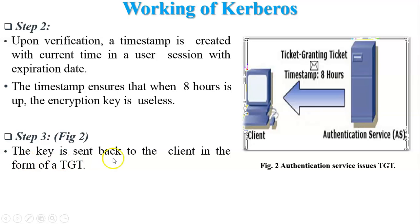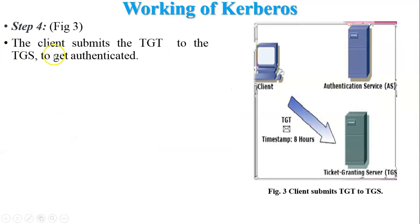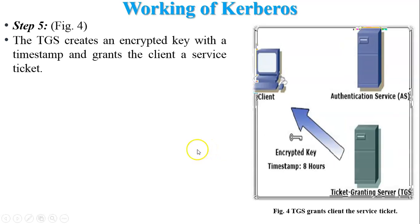Step 3: The key is sent back to the client in the form of a TGT (Ticket Granting Ticket). This TGT is provided by the authentication server to the client, and the client accepts it. Step 4: The client submits the Ticket Granting Ticket to the TGS to get authenticated. The TGT is provided by the client to the Ticket Granting Server, which then verifies it. Step 5: The TGS creates an encrypted key with a timestamp and grants the client a service ticket. This ticket is sent to the client with an encrypted key and a timestamp — after eight hours, the encrypted key expires.